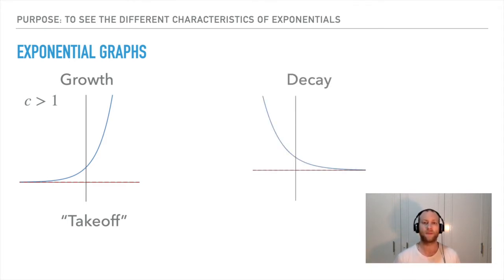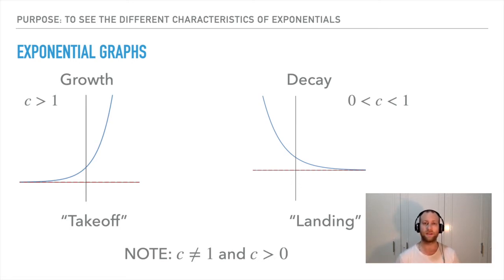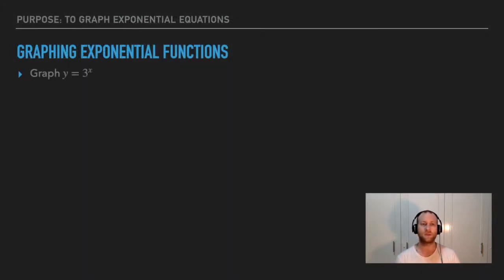Decay looks like a landing. Going from left to right, you're landing. This occurs when c is between zero and one. Note that c cannot equal one, because one to the power of anything is always one. C also cannot be zero or negative — zero to any power is zero, and a negative base produces a non-exponential pattern. Both cases have a horizontal asymptote at y equals zero.